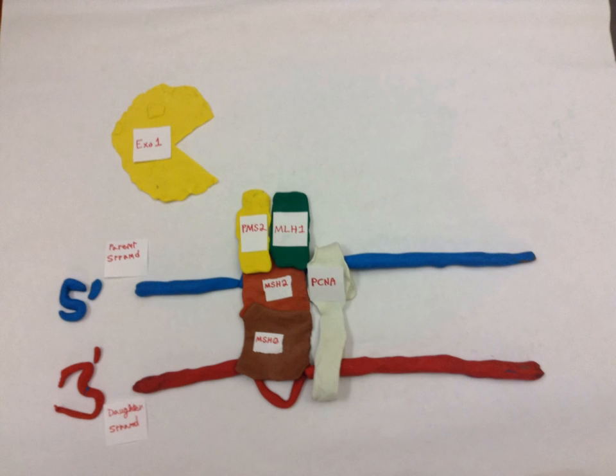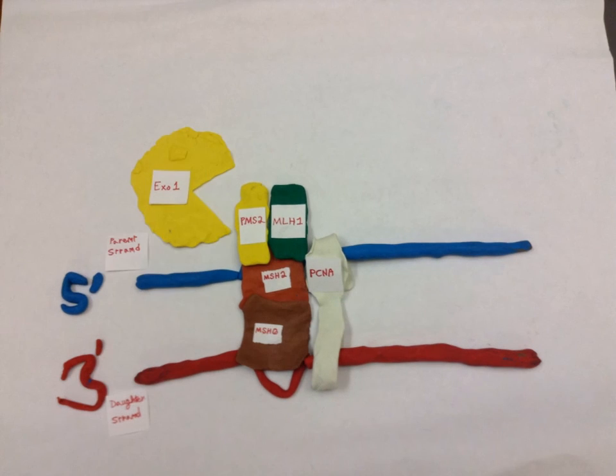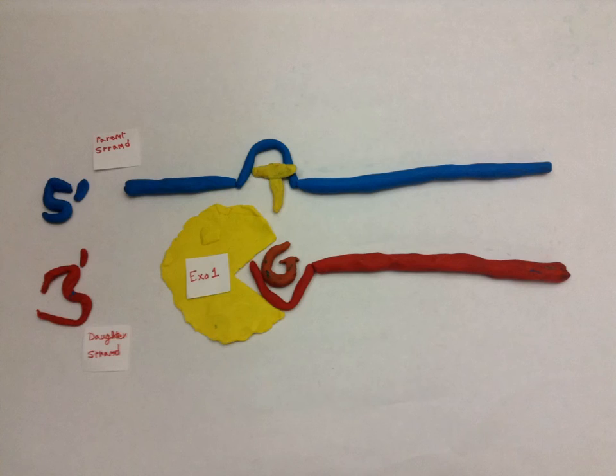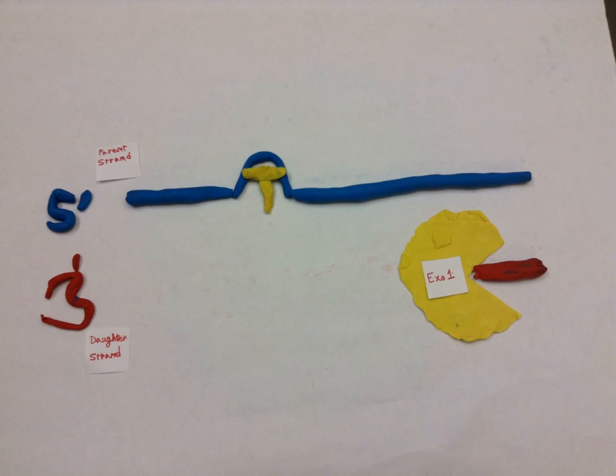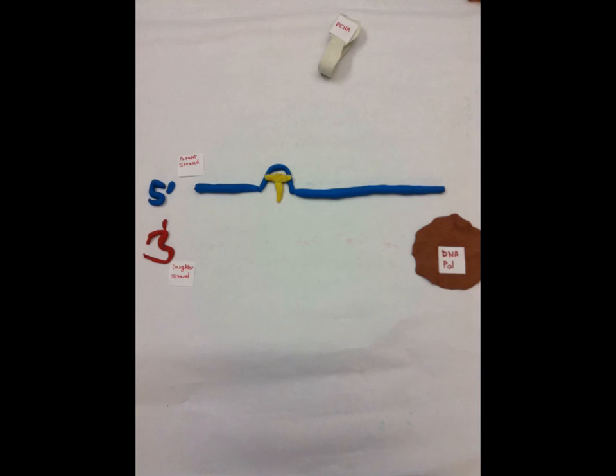The sliding of the complex recruits the activation of the enzyme XO1. XO1 starts from a nick in the 5' direction and travels toward the mismatch in the 3' direction, clipping up to several hundred nucleotides.